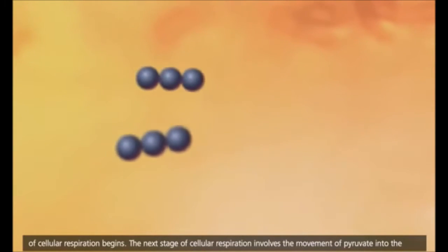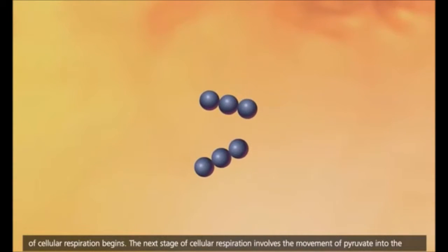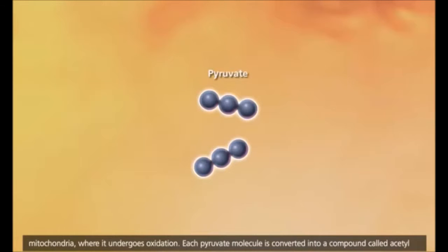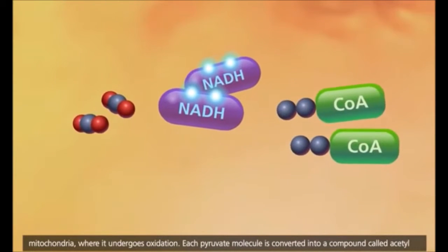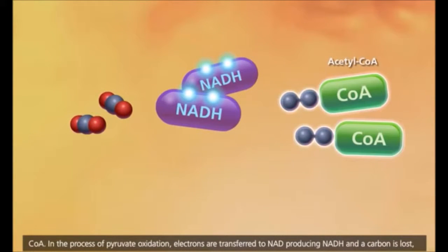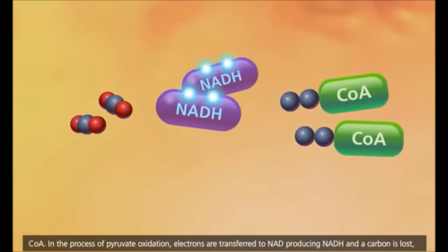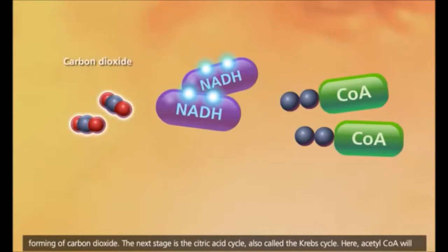The next stage of cellular respiration involves the movement of pyruvate into the mitochondria, where it undergoes oxidation. Each pyruvate molecule is converted into a compound called acetyl-CoA. In the process of pyruvate oxidation, electrons are transferred to NAD, producing NADH, and a carbon is lost, forming carbon dioxide.